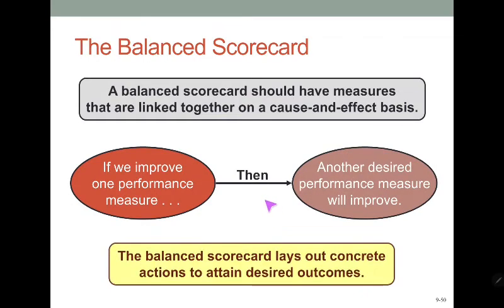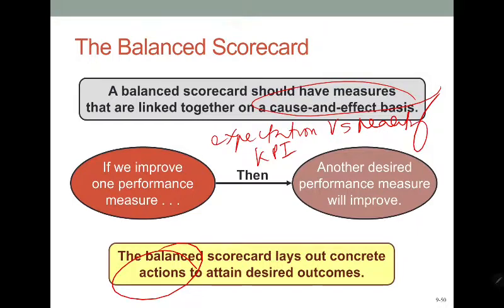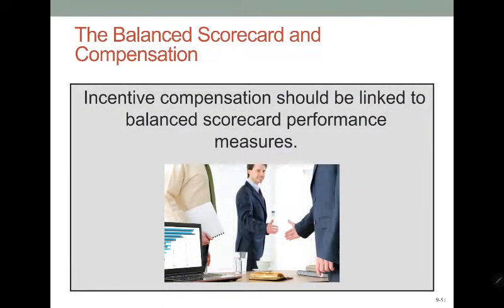There should always be a link between expectation and reality. The expectation is the KPI; reality is the actions that managers and other personnel actually perform. This is the cause-and-effect relationship: you set the performance measure based on what you desire as an outcome. That is also why it is a motivational factor — incentives are normally linked to the balanced scorecard performance measures.